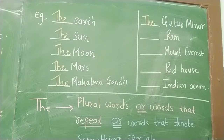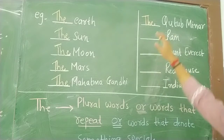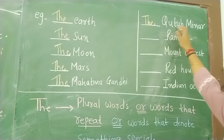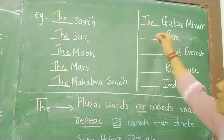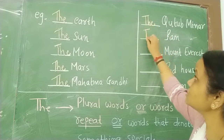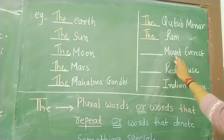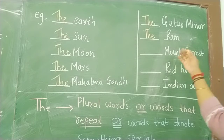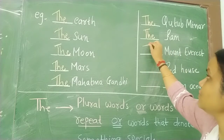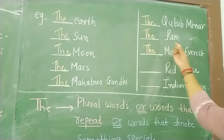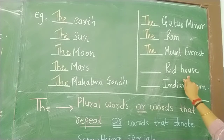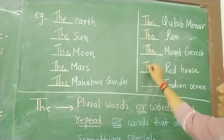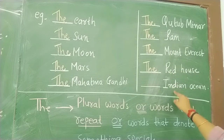That is the highest tower in the world and that is in Delhi. That is called the Kutub Minar. Then Ram — Lord Ram, Bhagavan Ram. He is a unique personality, so 'the'. Then Mount Everest — again Mount Everest unique, so we can use 'the'. The specific. Agar kisi ke ghar ka naam Red House hai, to there also we can use 'the' — the red house.